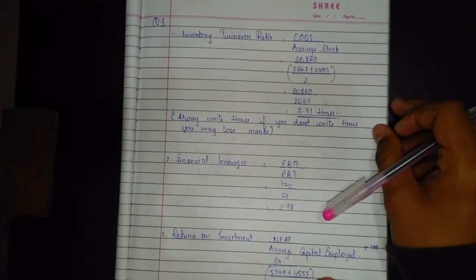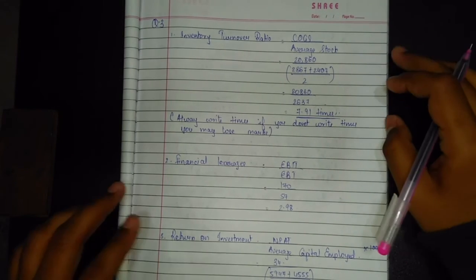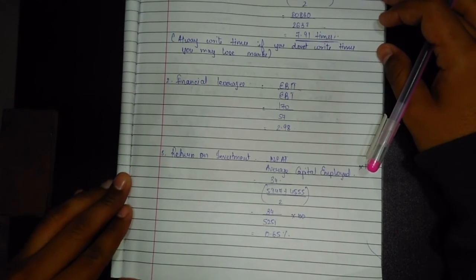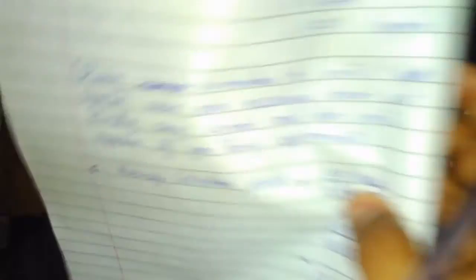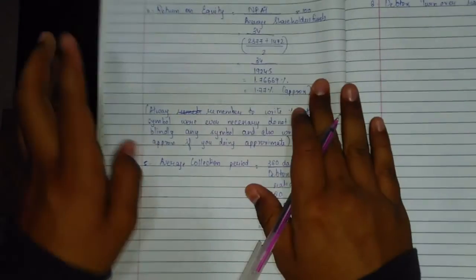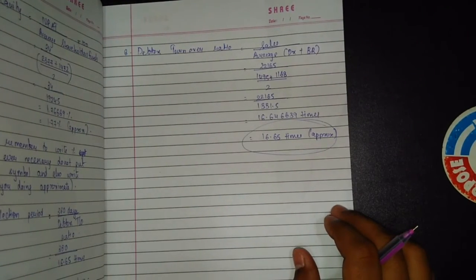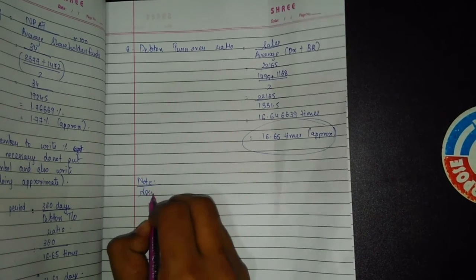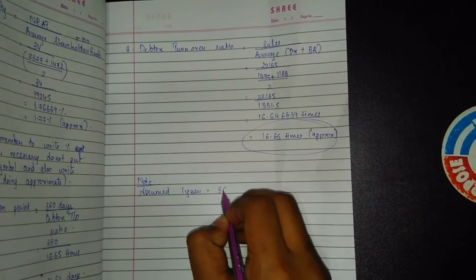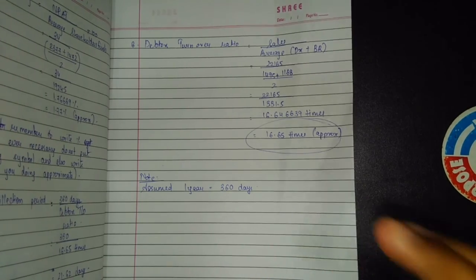We have completed question number 3. Please pause the video and copy the sums. Also write the note: assumed one year is equal to 360 days. This is a very important note. I hope you all have done this. I'll see you next time.